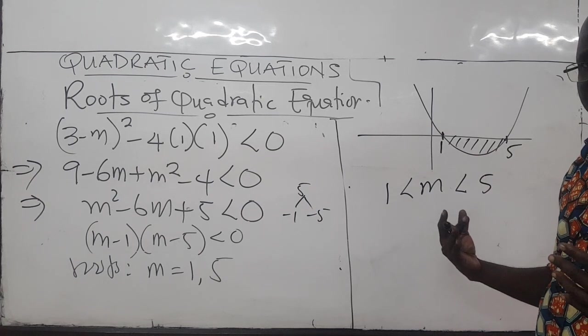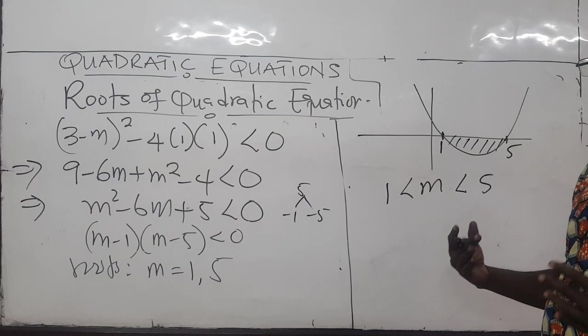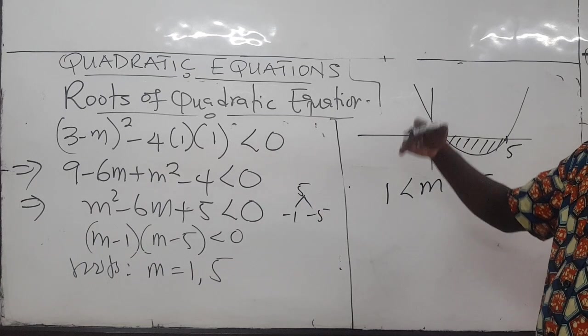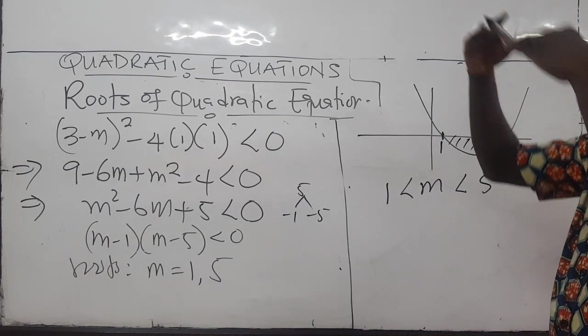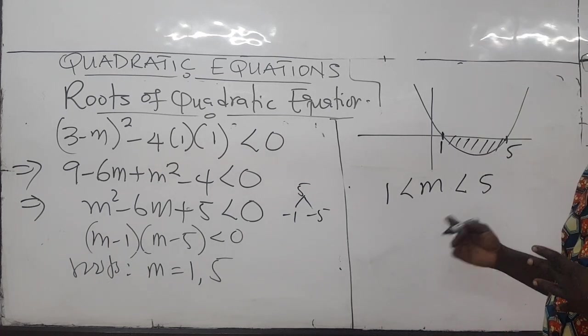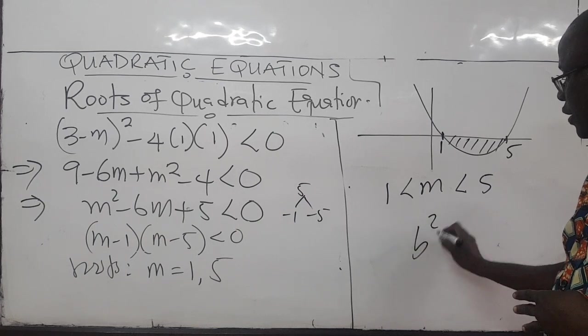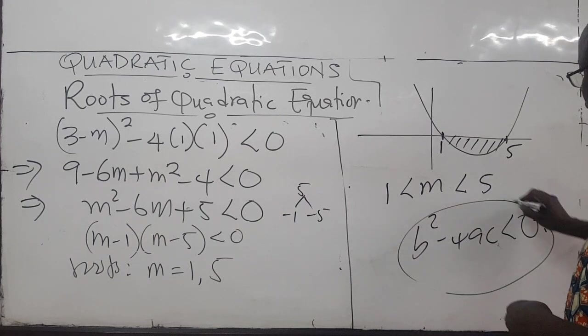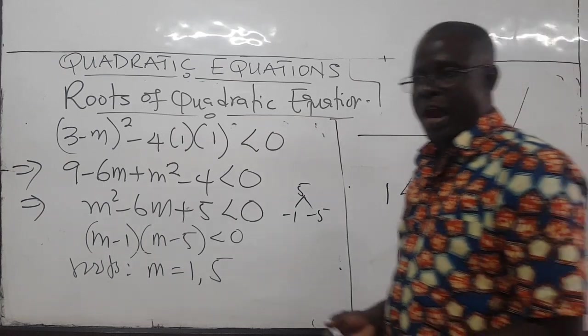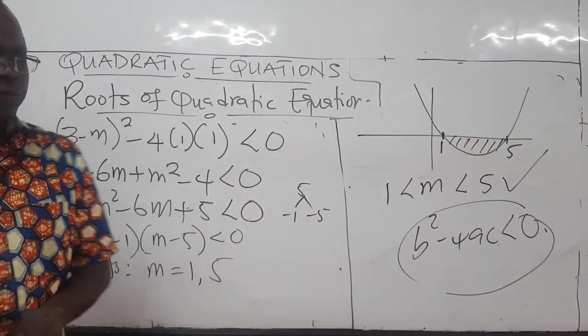If the question had said, find the values for which the quadratic will be negative, we'll really go through the same procedure. Because the quadratic is positive or negative when you have complex eigenvalues for which B squared minus 4AC is less than 0. So this is the range of values of M for that to quote.